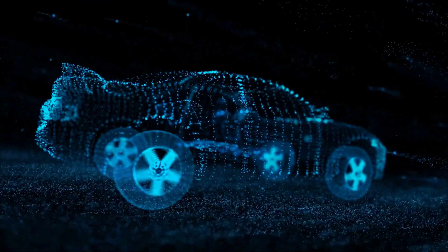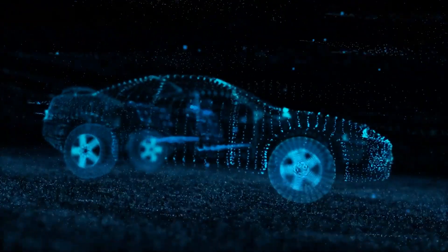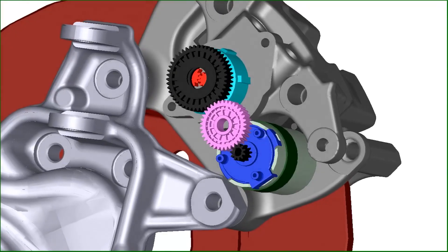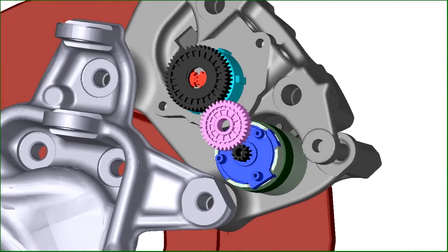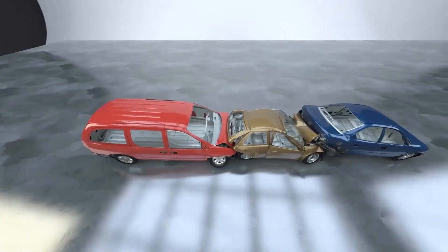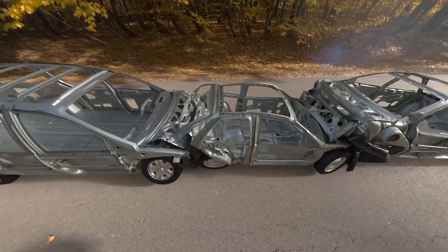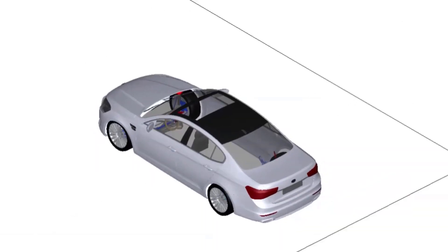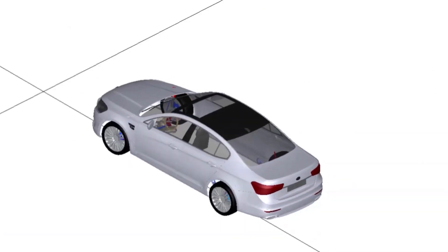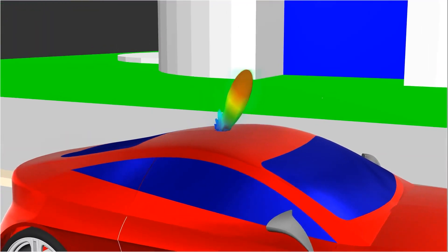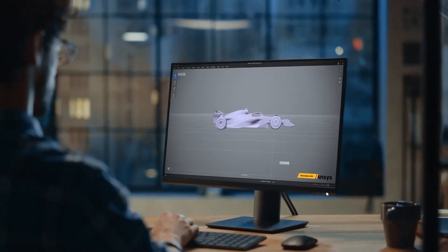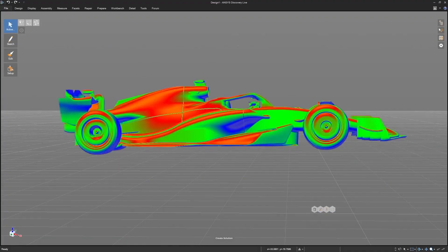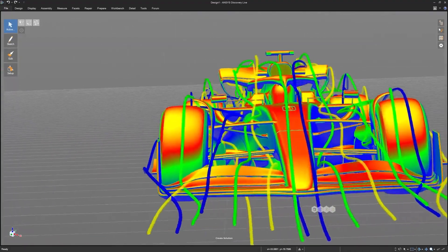vehicles are also transitioning to become software-defined. New functions are primarily implemented through software. ANSYS's simulation platform also includes a model-based development environment for reliable embedded software generation, with linkages to requirements and safety analysis. Developing and digitally validating over-the-air software updates is possible with the use of our true-to-physics reduced-order model, Digital Twins.